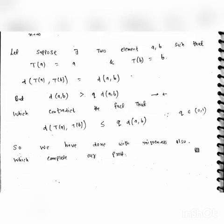Now we establish uniqueness. Suppose there exist two elements a and b such that T(a) equals a and T(b) equals b, meaning both are fixed points of T. Then d(a, b) equals d(T(a), T(b)), but d(T(a), T(b)) must be less than or equal to q · d(a, b). This means d(a, b) is less than or equal to q · d(a, b), which is a contradiction since q is in (0, 1). Therefore T cannot have two distinct fixed points, and the proof is complete. Thank you.